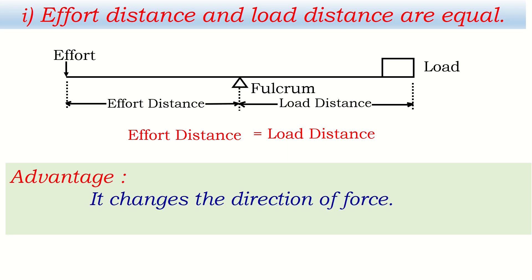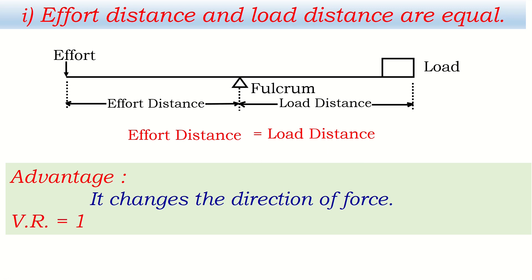Even so, it is still called a simple machine because it gives one advantage: it changes the direction of force. Without this lever, we would have to apply force in the vertically upward direction to raise the load, but with this lever, we apply force vertically downward and the load is raised upward. This makes our work convenient. When effort distance equals load distance, the velocity ratio becomes one.